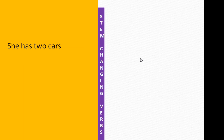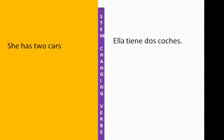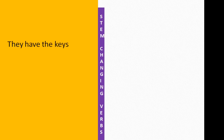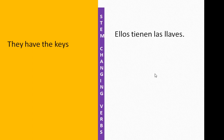'She has two cars.' The ÉL/ELLA/USTED form of TENER is TIENE. She is ELLA. 'Two' — refer to the chapter on numbers in Spanish. 'Cars' is COCHES, and since we're talking about more than one car, we use the plural: ELLA TIENE DOS COCHES. Next: 'They have the keys.' — ELLOS TIENEN LAS LLAVES, because we are talking about multiple keys. For LA/LAS, refer to the chapter on articles in Spanish.